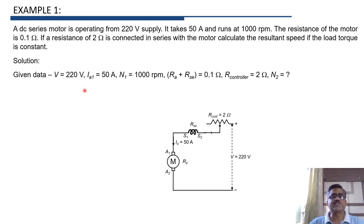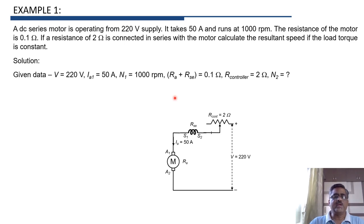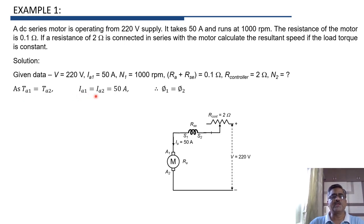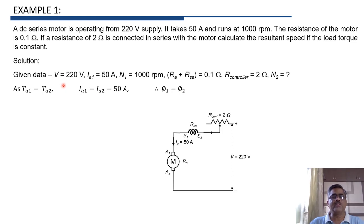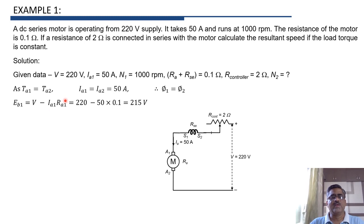In the first case, Ia1 is 50 ampere and N1 is 1000 rpm. Since torque is constant, Ia1 equals Ia2 equals 50 ampere, and the same current flows through the field winding, so phi1 equals phi2. The back EMF in the first case: Eb1 equals V minus Ia1 into Ra1, which is 220 minus 50 into 0.1, giving Eb1 equals 215 volt.